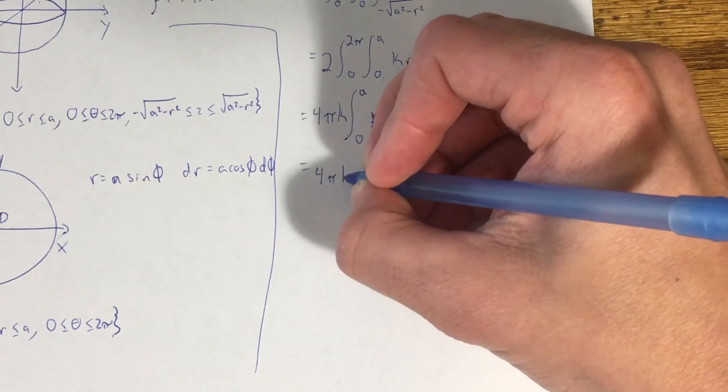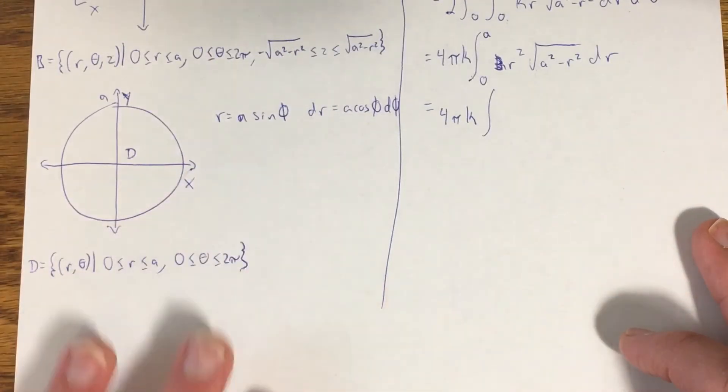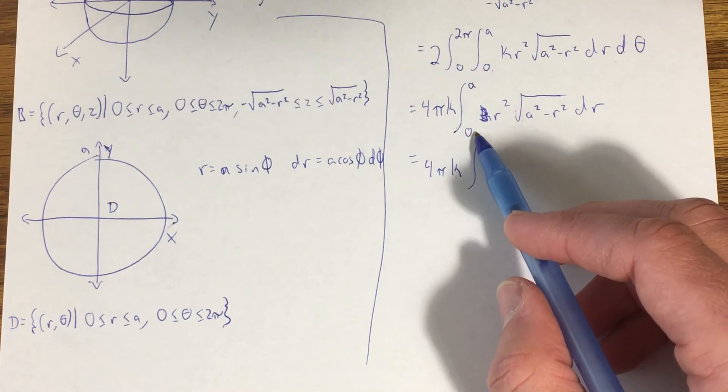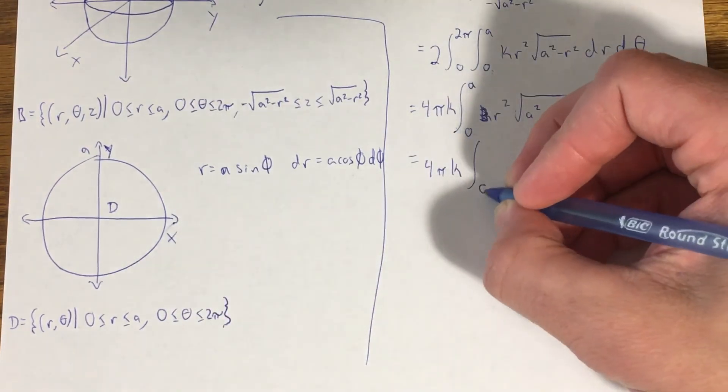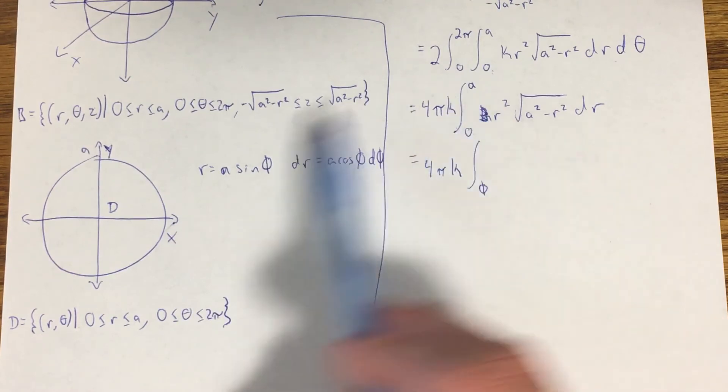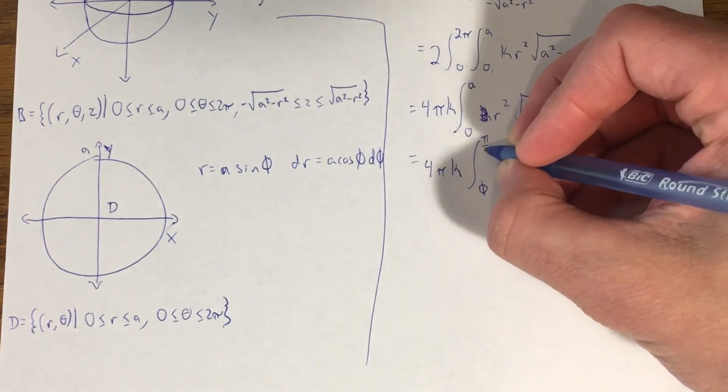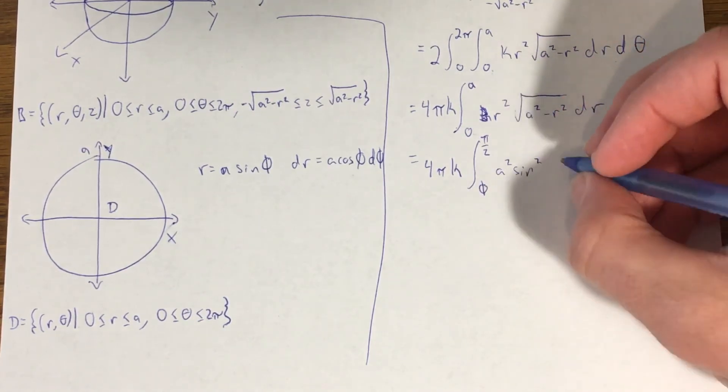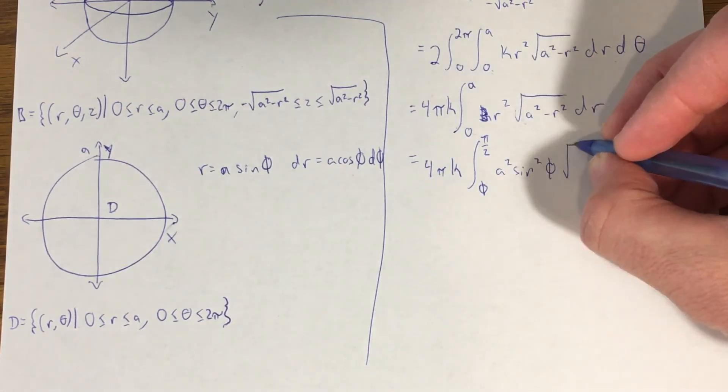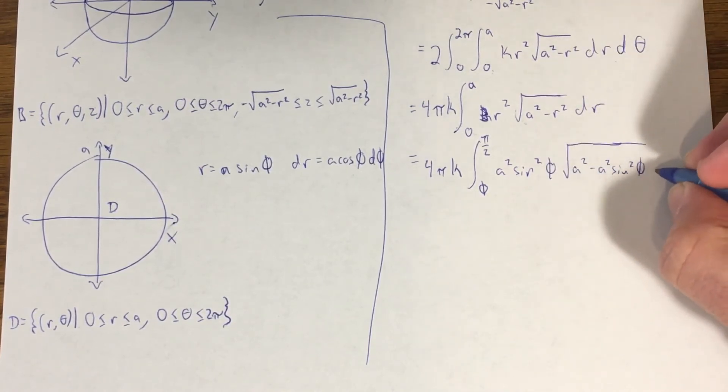r equals a sine of φ. dr is going to be a cosine of φ dφ. We need to make some substitutions here. So I'm going to get 4πk. Now remember, when you make a trig sub, your limits of integration are going to change with it. So my lower limit of integration is 0, but that's the value of r that goes here. If I set r equal to 0 here and solve for φ, I'm going to get that φ is also equal to 0. Similarly, if I set r equal to a right here, I would see that sine of φ has to be 1. φ becomes π over 2.